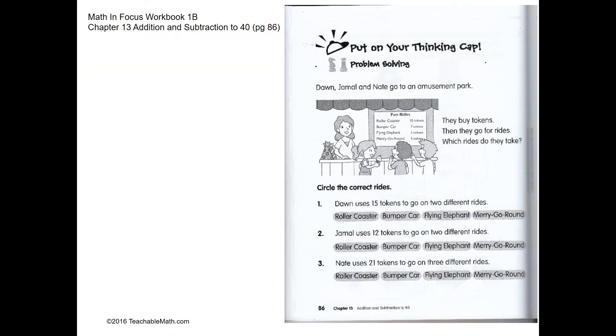This is a question on the amusement park. We need ten tokens for the roller coaster, seven for the bumper car, six for the flying elephant, and five for the merry-go-round.